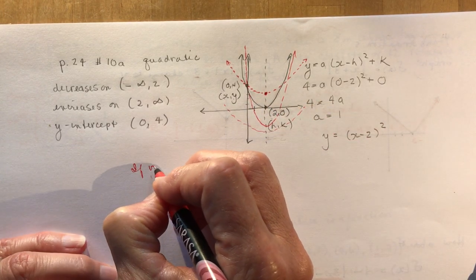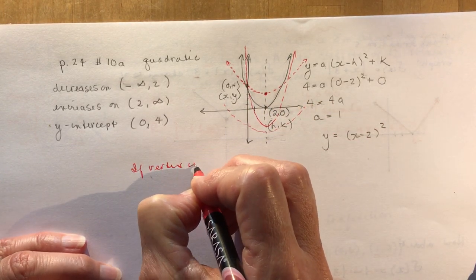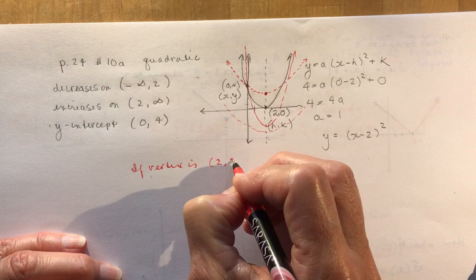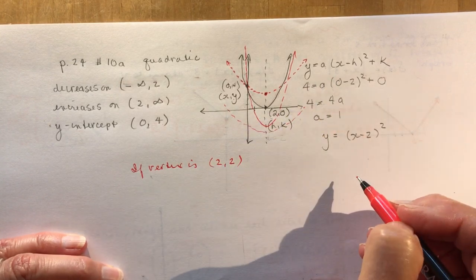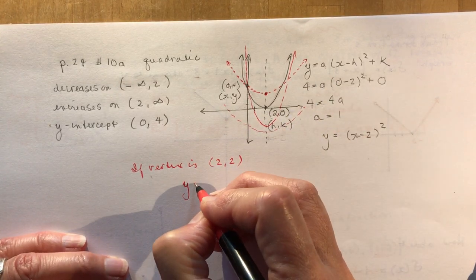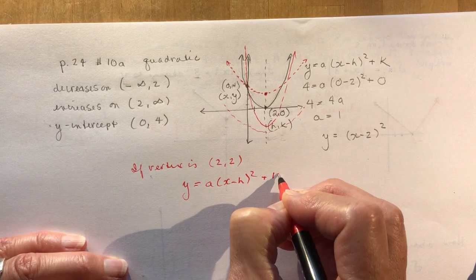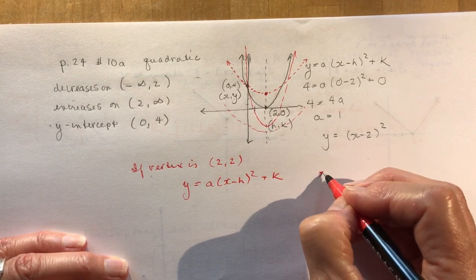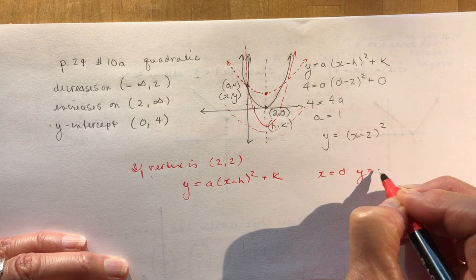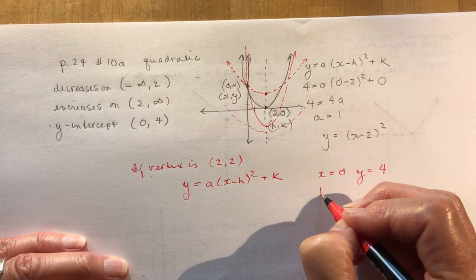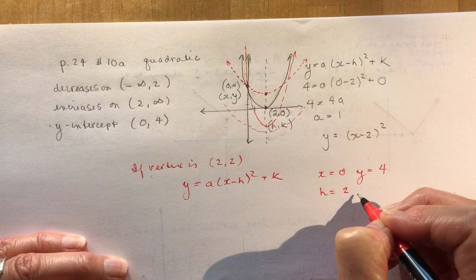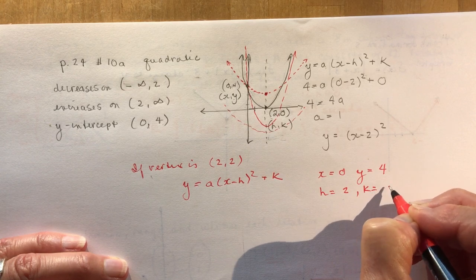So if the vertex was 2, 2, how does that change my equation? So I would still write out y equals a(x minus h) squared plus k. And I still have x is equal to 0, y equals 4. That's my y-intercept. But this time my h and k are going to be 2 and 2.